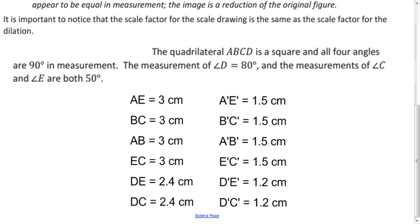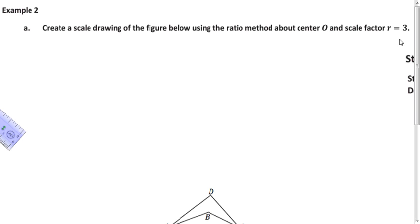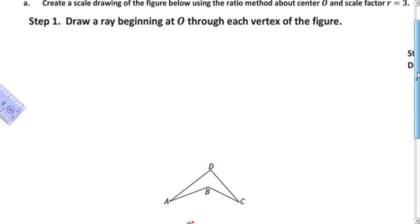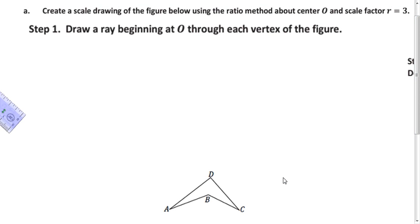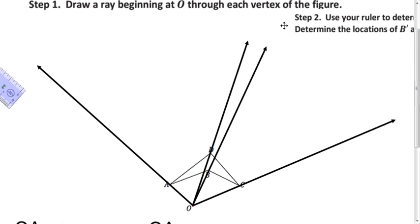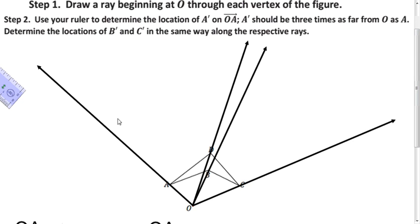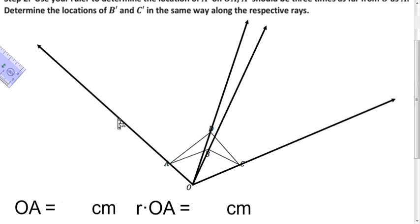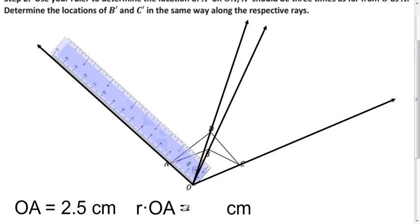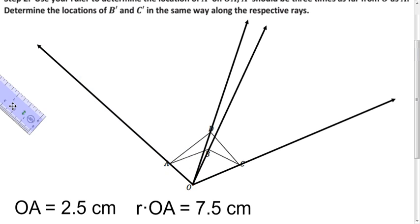Now let's do the same but with scale factor R equals 3. We'll do the same process: draw rays from your center through each vertex. Think about where the image is going to be — this is an enlargement since the scale factor is greater than 1, so the image will be farther out. Here are all my rays. We figure out how far each vertex is from the center of dilation and multiply that distance by 3. The distance from O to A in my diagram is 2.5 centimeters, so multiply by 3.